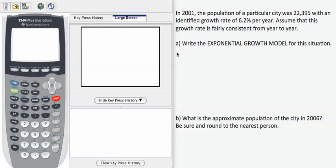In this example, we're going to look at writing an exponential growth model given information about starting population and the growth rate in a particular situation. We are told the population of a city is 22,395 and the growth rate of this population is 6.2% per year. I'm going to start out by writing down the information I know, which will be helpful in creating the model.